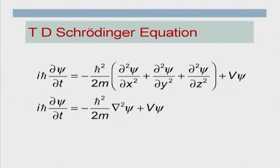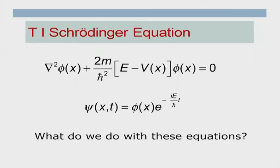This is my time-independent Schrödinger equation written in three-dimensional form using the del-squared operator: del²phi + (2m/ħ²)(E − V)phi = 0. When V is purely a function of x, psi(x,t) = phi(x)·e^(−iEt/ħ). We have now obtained the equation. Let us try to see what we can do with it.